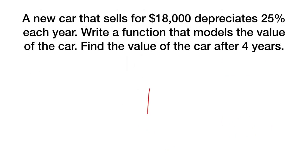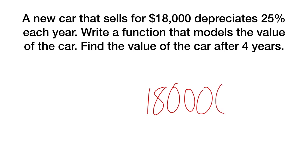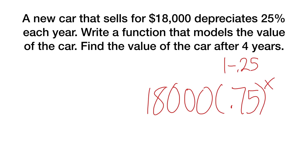A new car sells for eighteen thousand dollars and it depreciates by twenty-five percent each year. Write a function that models the value of the car, and then find the value after four years. The initial value is 18,000. Because we are depreciating, we do one minus 0.25, which is 0.75 — meaning seventy-five percent. We want the value after four years, so our formula is 18,000 times 0.75 to the x, and we plug in x equals four.